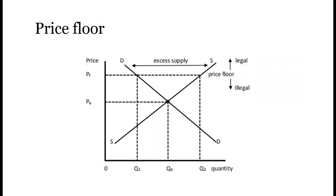The diagrammatic exposition of a price floor looks like this. We have a normal demand curve and a normal supply curve, with an equilibrium price and equilibrium quantity. An effective price floor is set above the market clearing price. The good has become so expensive that demand will decrease; however, supply will increase because firms can now profit from it.